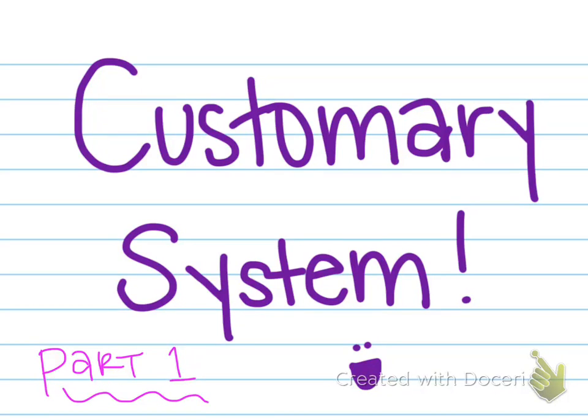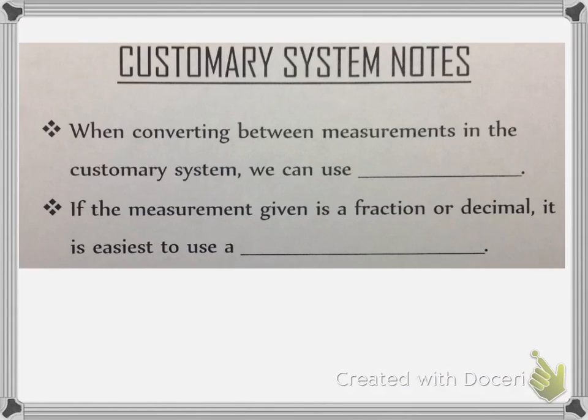We are going to learn about the customary system. Customary system notes: when converting between measurements in the customary system, we can use proportions. However, if the measurement given is a fraction or decimal, it is easiest to use a unit rate.